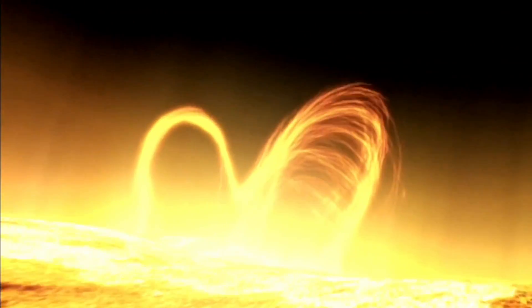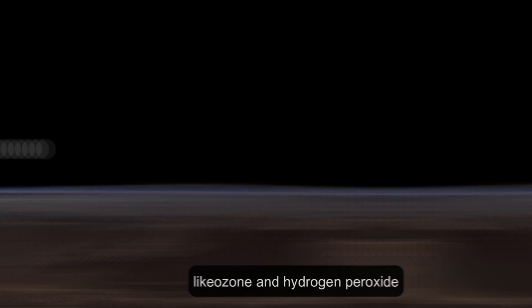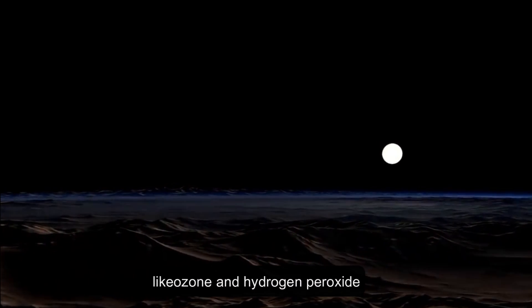But we do know that Proxima b's star, Proxima Centauri, emits high energy radiation that can produce highly reactive chemicals like ozone and hydrogen peroxide, which can be toxic to life.